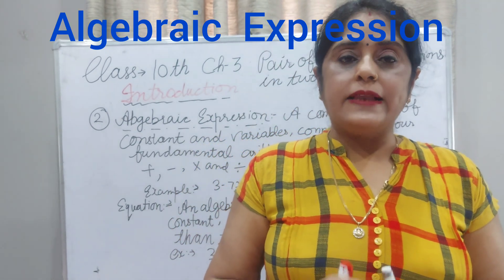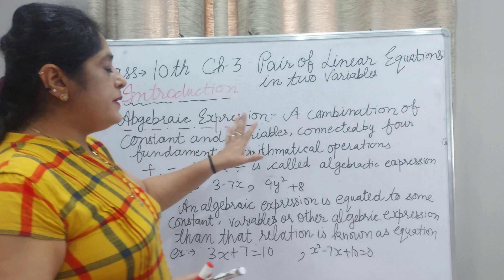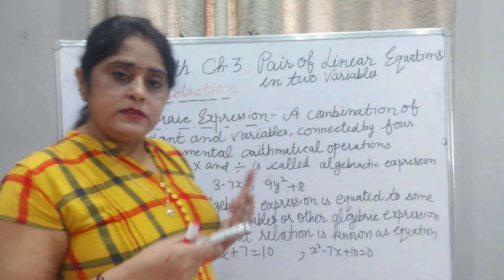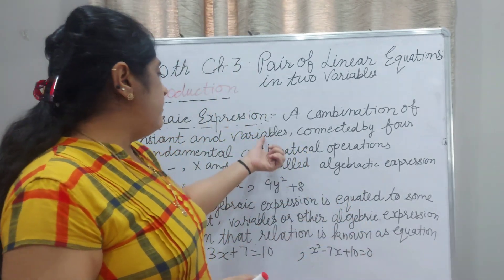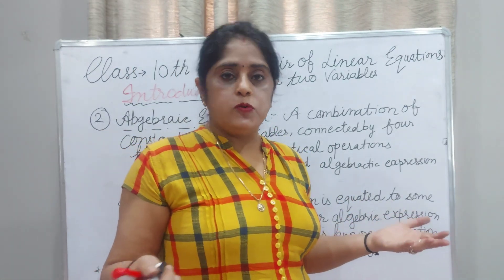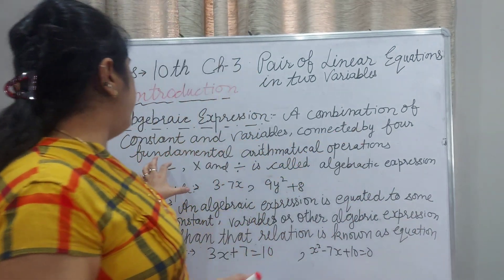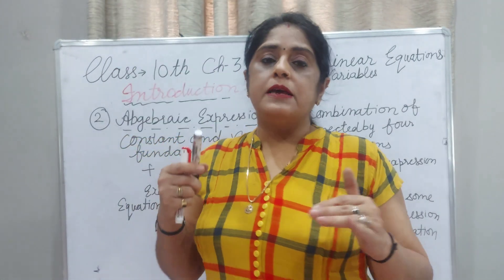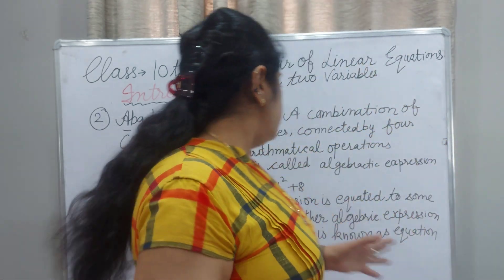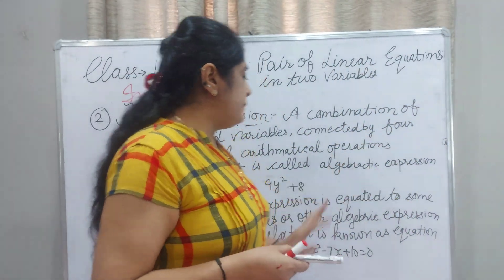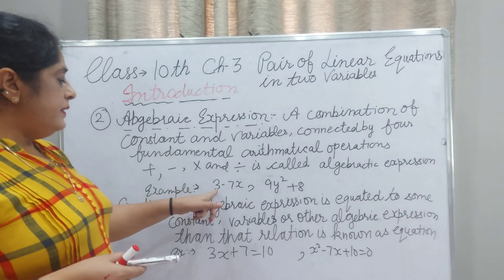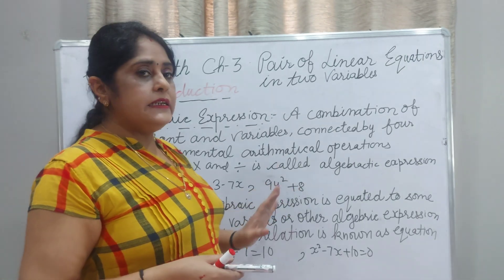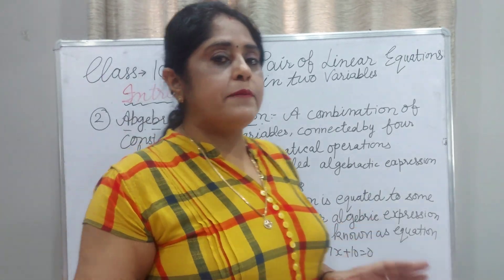Now I will tell you about algebraic expression. An algebraic expression is a combination of constants and variables. Constants means 3, 4, 5 — these are constants. And variables are X, Y, Z, P, Q, R — what you are using — connected by the four fundamental arithmetic operations: plus, minus, multiply, and divide. That is called an algebraic expression. For example, 3 − 7X where X is a variable, or 9Y² + 8. These are examples of algebraic expressions.